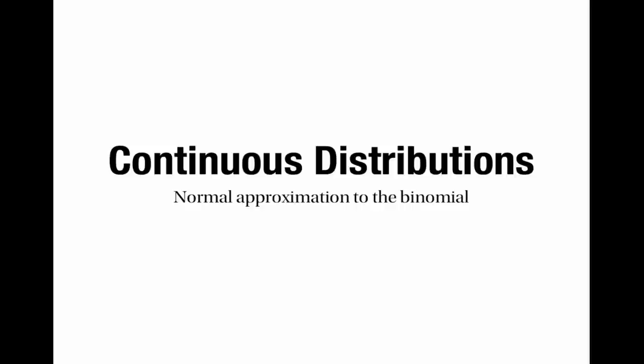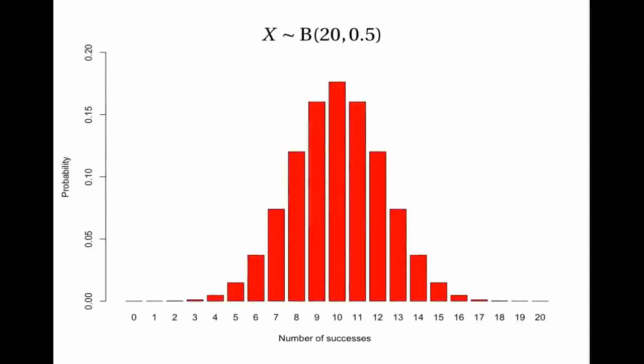This is a video about using the normal distribution to approximate the binomial distribution. Suppose that x is a random variable with the binomial distribution with 20 trials and 0.5 as the probability of success. If we draw a bar chart of the probabilities for different possible numbers of successes, it looks something like this — and you'll notice straight away that this has the familiar bell shape from the normal distribution.